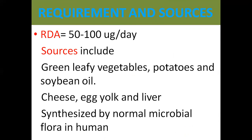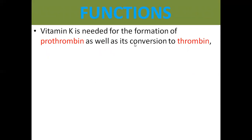Now let's look at the functions of Vitamin K. It is needed for the formation of prothrombin as well as its conversion to thrombin, which is essential for blood clotting. Clotting factors exist in inactive forms and are converted to active forms. Prothrombin (Factor 2) is activated to thrombin in a Vitamin K-dependent process, and prothrombin synthesis occurs in the liver.